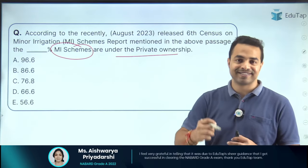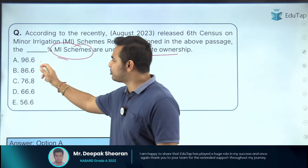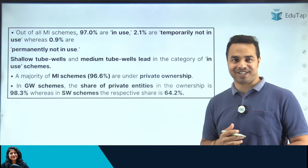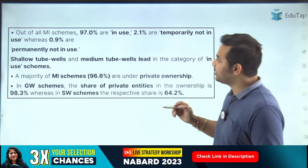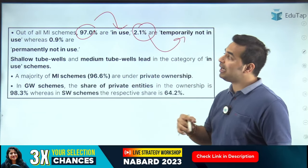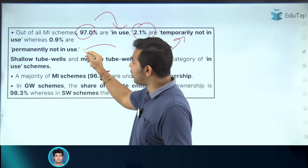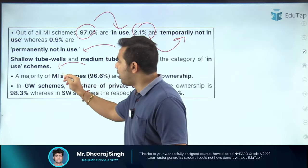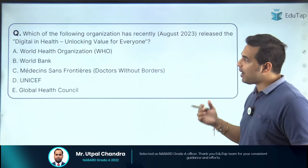96.6% of minor irrigation schemes are under private ownership. In terms of usage: 97% of schemes are in use, 2.1% are temporarily not in use, and 0.9% are permanently not in use. Shallow tube wells and medium tube wells lead in the category of in-use schemes. A majority of MI schemes are under private ownership.